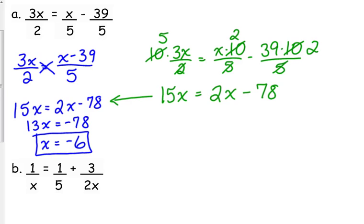The LCD between all the denominators, between 2 and 5, is 10.